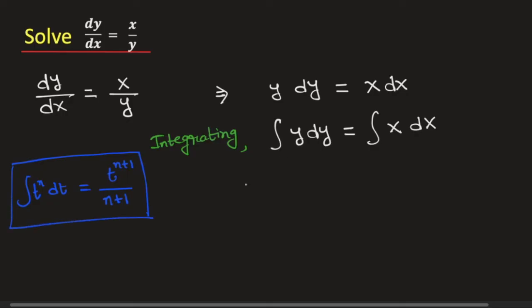Thus, we will have y squared divided by 2 is equal to x squared divided by 2, and then we will add the integration constant, which we will write as C/2.